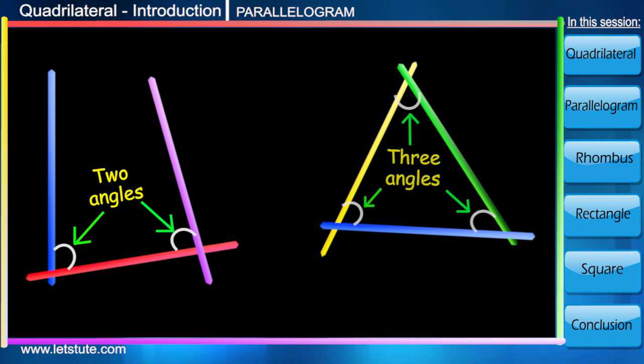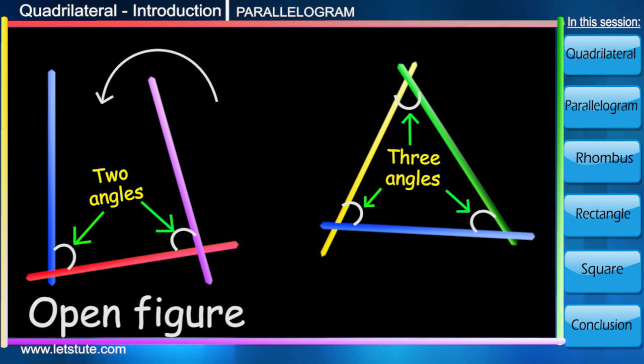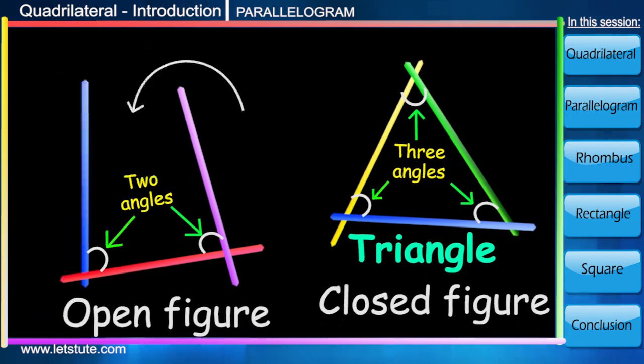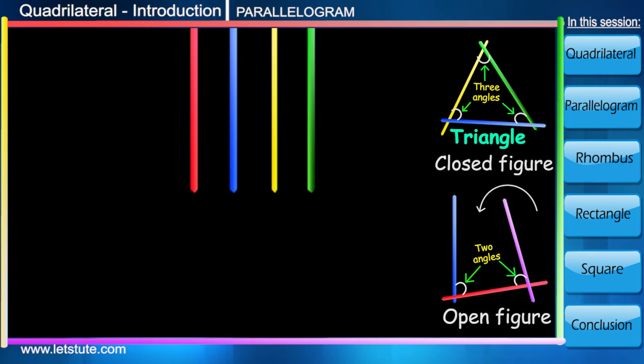Well, they can either form two angles or even three angles. When only two angles can be made, it will be an open figure from one side, and when it forms three angles, it will be a closed figure—a triangle.